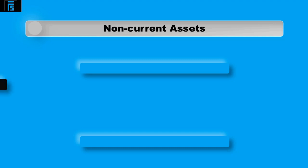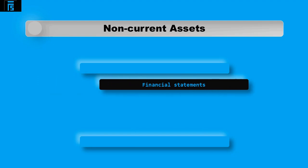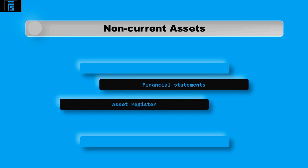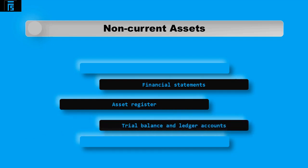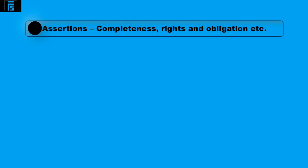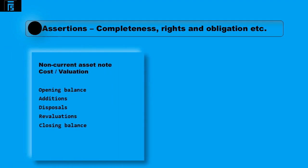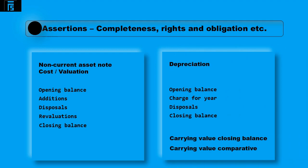In order to audit non-current assets effectively, the auditor will need to review the financial statements including the statement of financial position and the non-current asset note, the asset register, and the trial balance and ledger accounts. The key assertions to be verified are completeness, rights and obligations, valuation and existence. Visualising the non-current asset note, the auditor needs to ensure each balance has been audited — including opening and closing balances, new assets purchased (additions), disposals of assets in the year, depreciation, and revaluations.